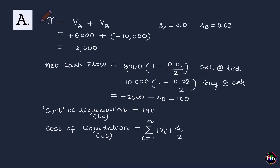The dollar value of the investor's entire portfolio equals the dollar value of position A plus the dollar value of position B. Position A is a long position worth +$8,000; position B is a short position worth −$10,000. Net-net, the risk system shows the total market value of the portfolio today to be −$2,000, arrived at using mid prices.